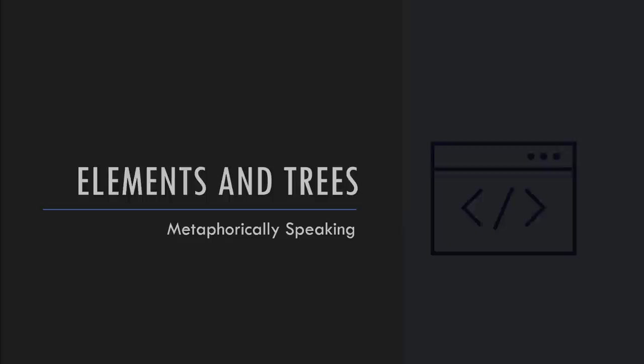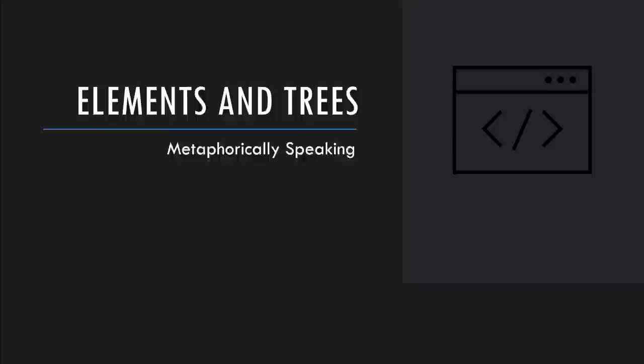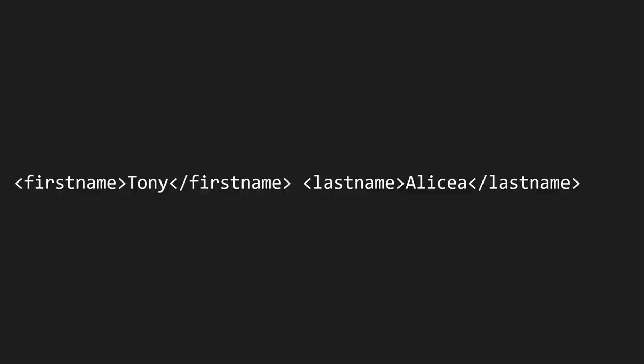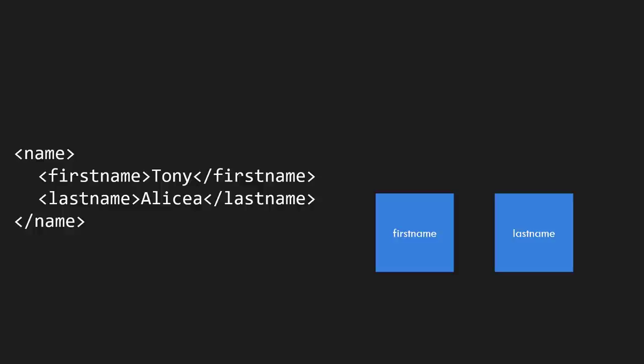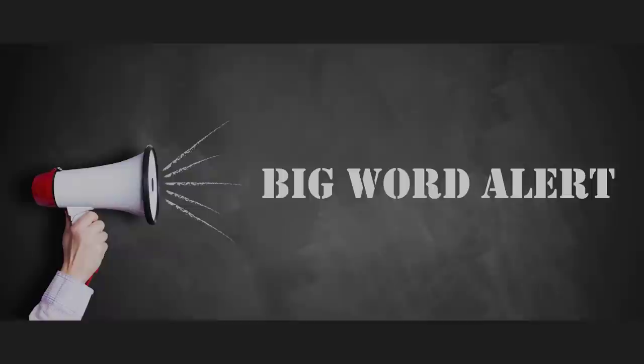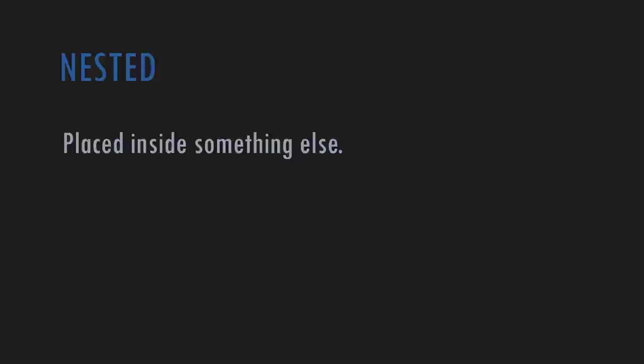It's time to connect two ideas that we've seen: elements and trees. Let's suppose with my markup language I can mark up my name - my first name and my last name. We can think of each element - that's the start and end tags with all attributes and contents - as a node in a tree. Let's suppose our two nodes had a parent. The first name and last name elements are contents nested inside the name element.